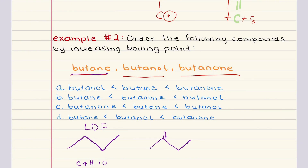Next, let's look at butanone. This is a ketone — it contains a carbonyl functional group. The presence of this polar carbonyl allows butanone to exhibit dipole-dipole interactions, which are stronger than London dispersion forces. As a result, butanone has a higher boiling point than butane.